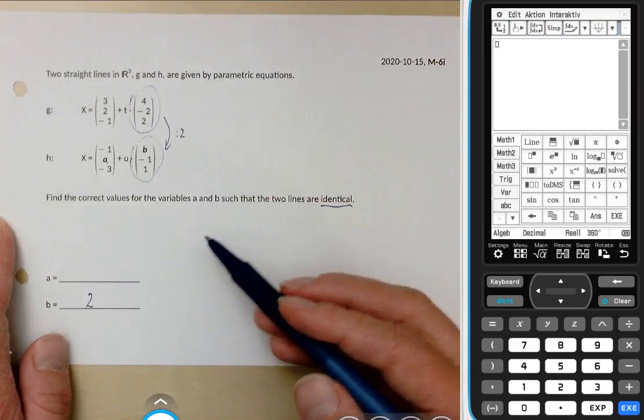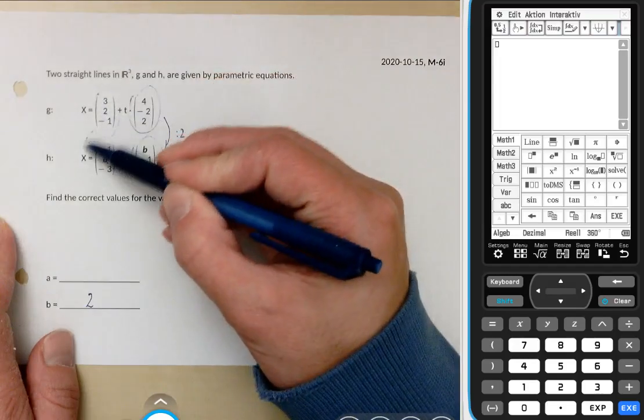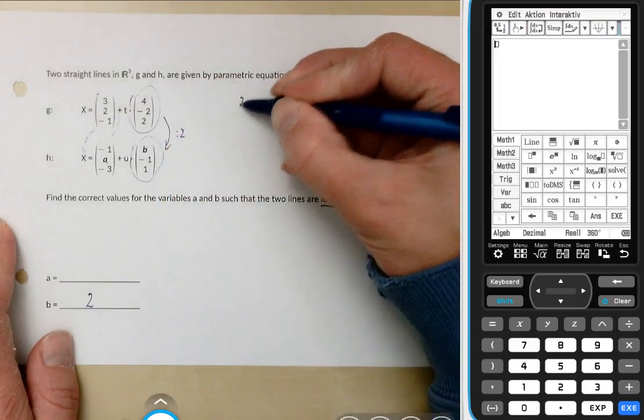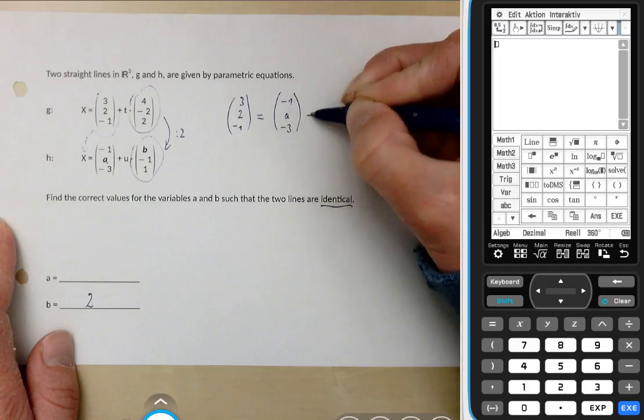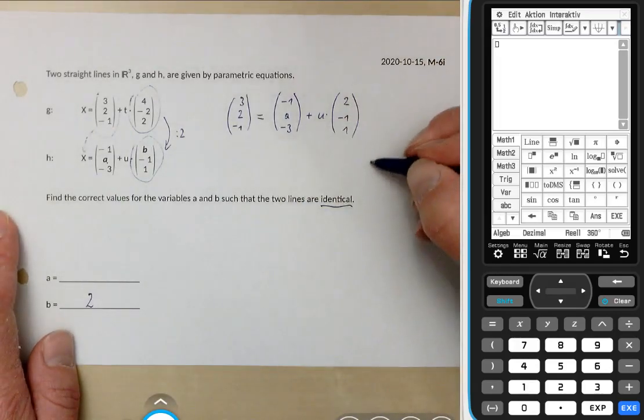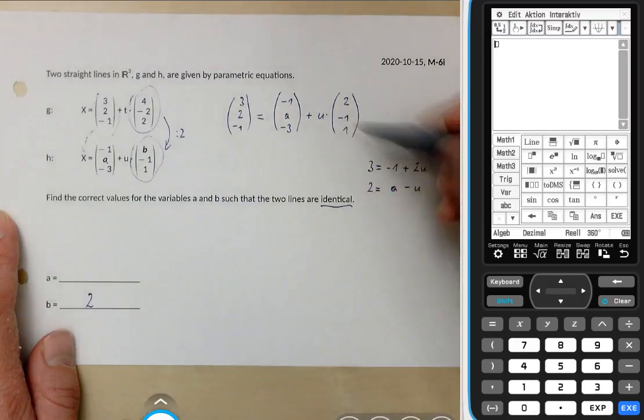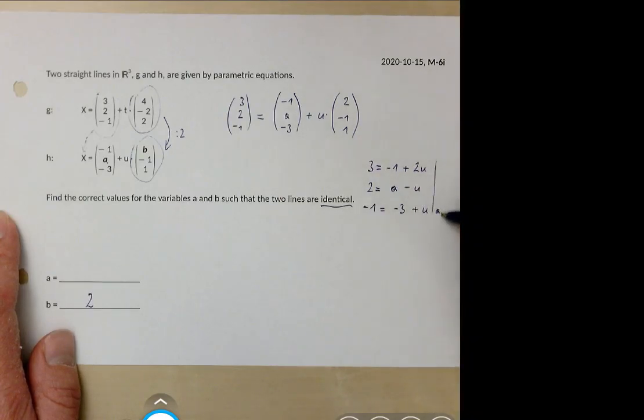That's the first of these variables. For the second just substitute the initial point of one of the lines for the x of the other line. So (3, 2, -1) equals (-1, a, -3) plus u times (2, -1, 1). That's a system of three equations again. Let's write it down. 3 equals -1 plus 2u. 2 equals a minus u and -1 equals -3 plus u. So that's your system of three equations. The variables are a and u.